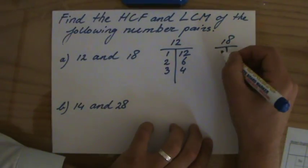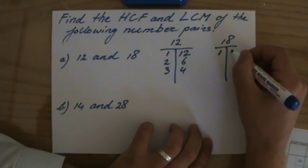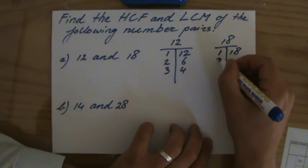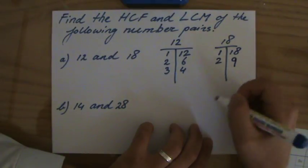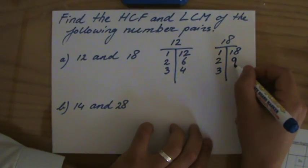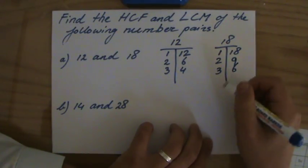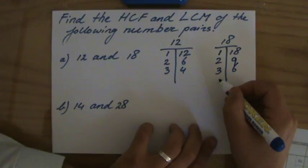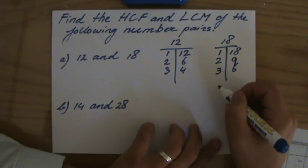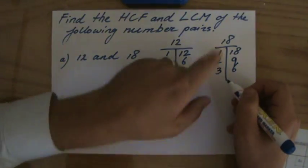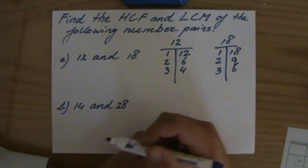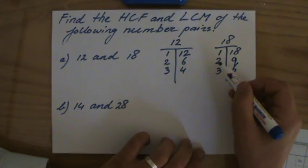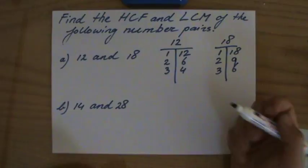Let's do the same for 18: 1 times 18, 2 times 9, 3 times 6, 4 times nothing, 5 times nothing, and then 6 times 3 — already have those. So 18 also has 6 factors: 1, 2, 3, 6, 9, and 18.